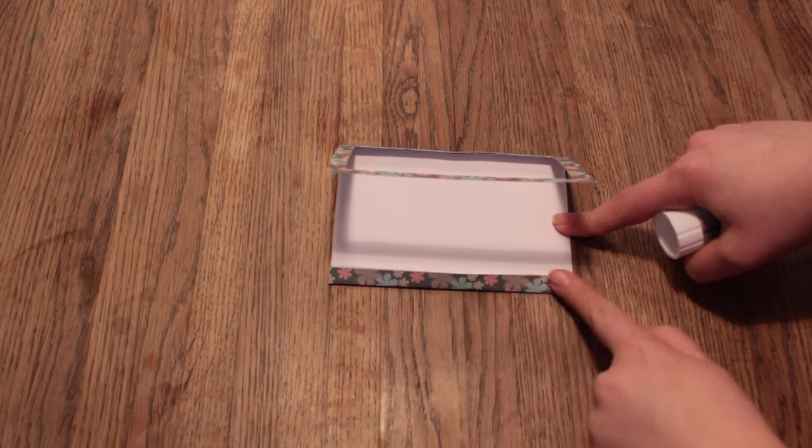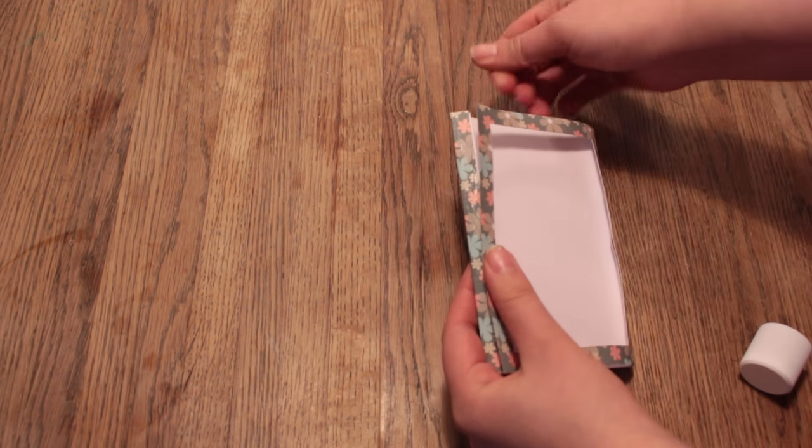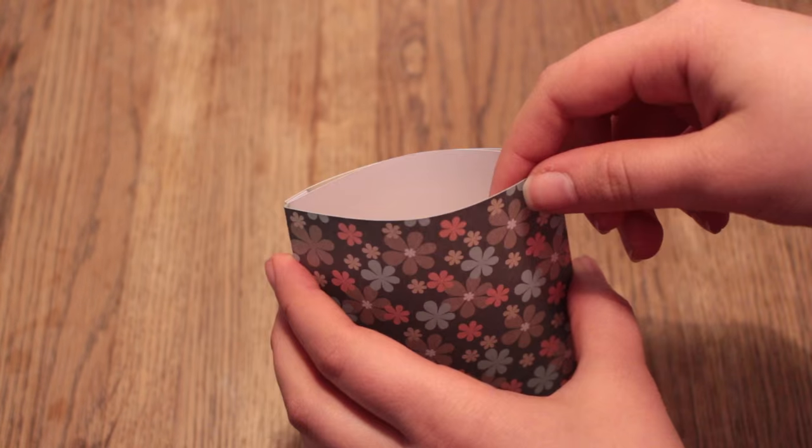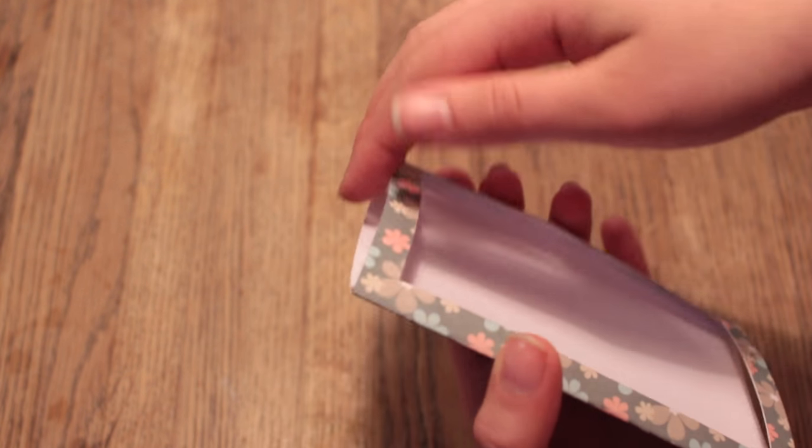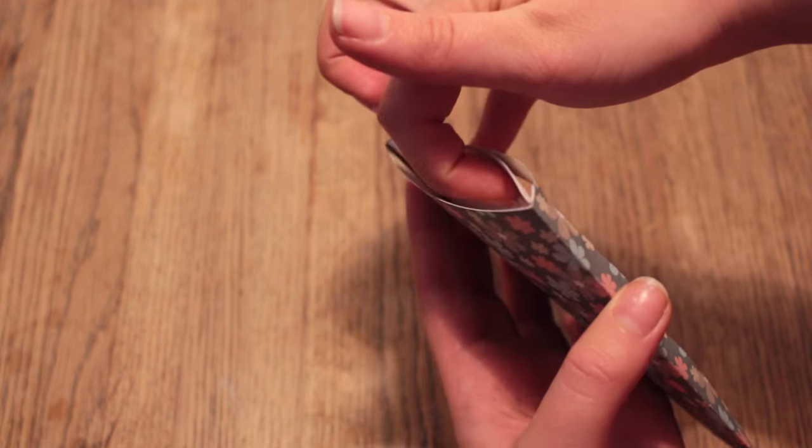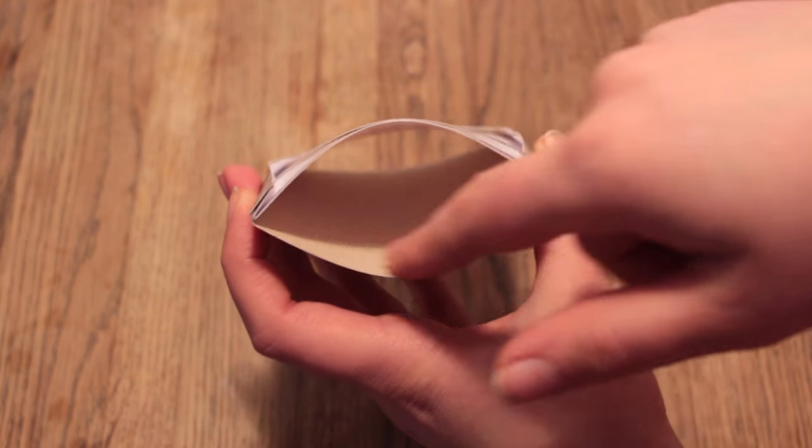Now we need to glue one of the ends together, so move the inner piece away and then put some glue on the back to make the back and the inner piece stick together and give it a good squeeze to make it stick properly.